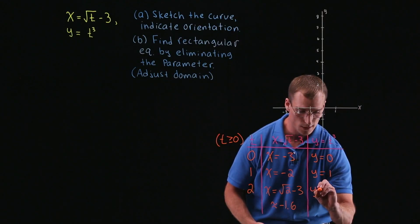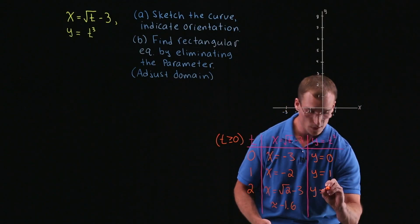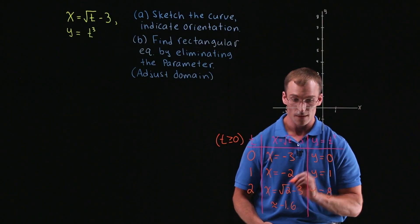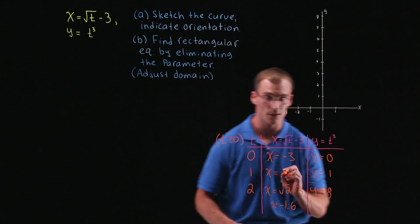And of course, y equal to 2 cubed, y is just equal to 8. So let's go ahead and plot our points, and then sketch our graph.